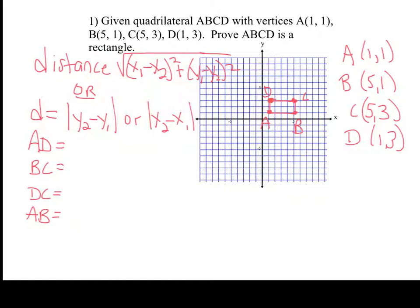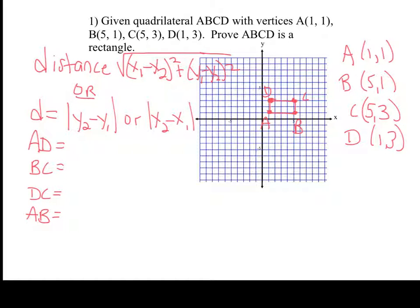Now we're back. Notice I have the distance formula up here. But in this case, because the rectangle is countable — we have horizontal lines and vertical lines — we can actually use something different to show our work. When you have an exam and you have countable side lengths, you need to show some kind of work. You can't just write 'I counted it.' So either you do the distance formula, which is fine but a little lengthy, or you use the absolute value of the difference between the y's or the absolute value of the difference between the x's.